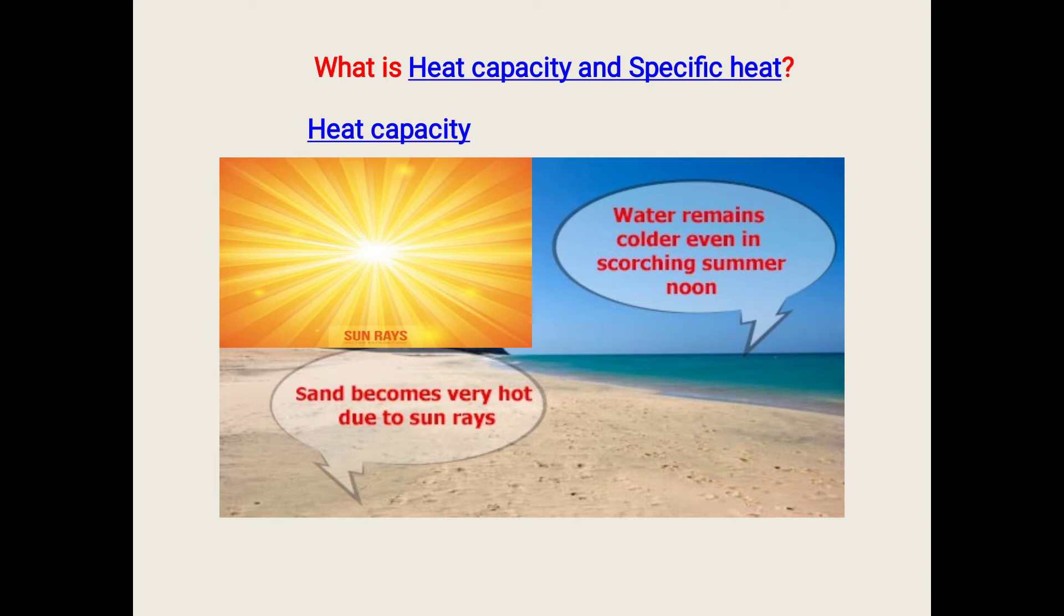Let me give a funny example for this. A short-tempered person gets angry very soon, while a calm person who keeps on tolerating everything will not become angry soon. Heat capacity is something similar to this.